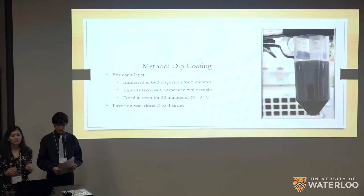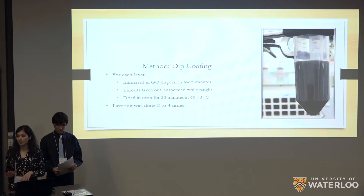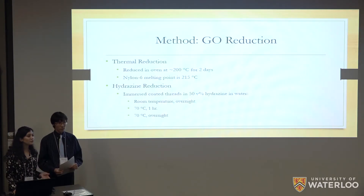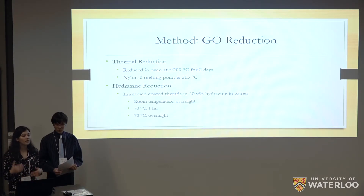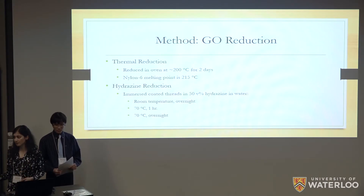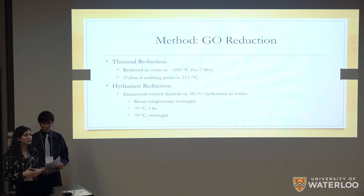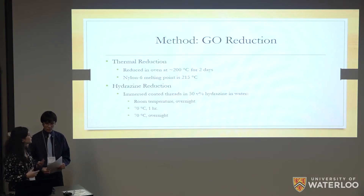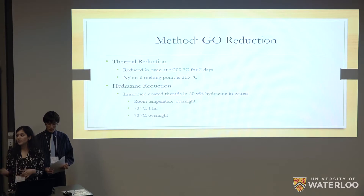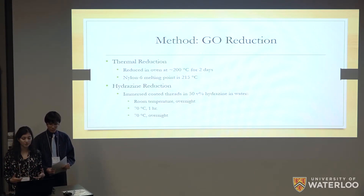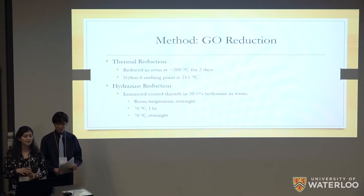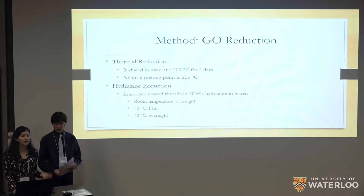For dip coating, we manually immersed the nylon threads for five minutes in the GO dispersion based on our reference paper, and then dried them in the oven at around 70 degrees. For the reduction, we first thought about using thermal reduction, which is very commonly used. However, the temperature we could reach was only limited to 200 degrees due to the melting point of nylon, so we knew thermal reduction would not give us efficient results. We switched to chemical reduction using hydrazine. We tried three different conditions: 50 volume percent hydrazine solution at room temperature overnight, then heated at 70 degrees for one hour on recommendation of our supervisor, and then we also tried heating it overnight to increase the time period.